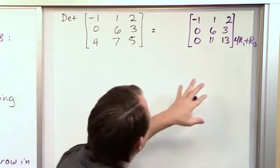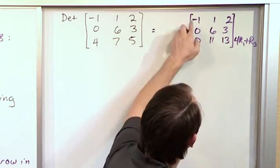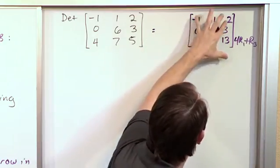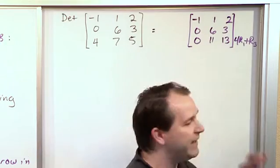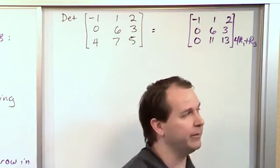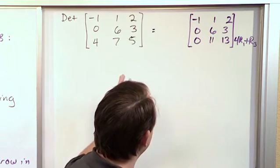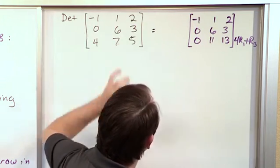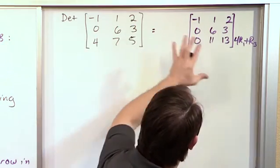So I'm doing my regular row reduction techniques step by step, trying to get into a triangular matrix. But in order to get this matrix from this one, you can call this matrix A and matrix B in terms of our rules that we were just developing. This is the parent matrix. This is the child matrix or something, however you want to think about it. The determinant of this original matrix is what we want to calculate. But in order to get there, we had to do this step.